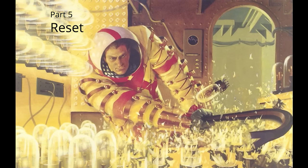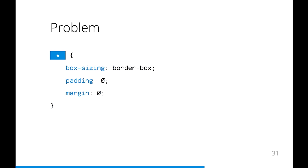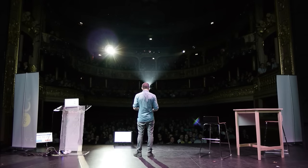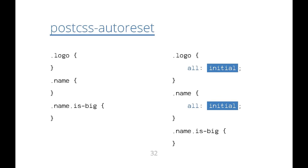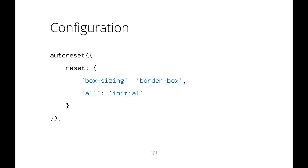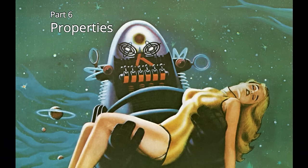The next thing is the reset. The global reset is a very bad thing, but we need to do something. This is why we have PostCSS After Reset — a plugin to use a local reset. It adds your reset properties to each of your rules, and it is totally customizable — you can change the list of reset properties.